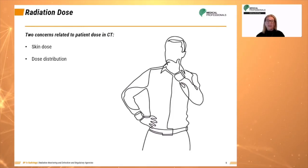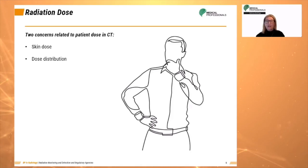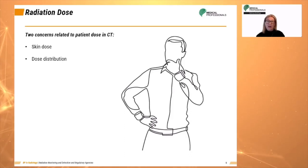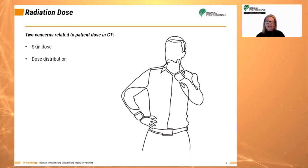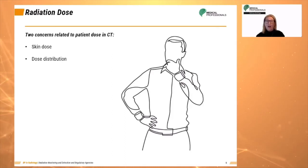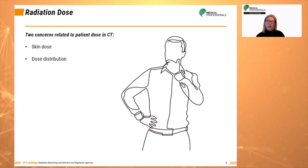If we list the concerns related to patient dose in CT, we can talk about skin dose and dose distribution. The dose at the edge of the CT scan beam does not decrease to zero immediately, and the skin dose for a succession of adjacent scans is greater than the skin dose for single scans, along with overlap from previous and subsequent scans.